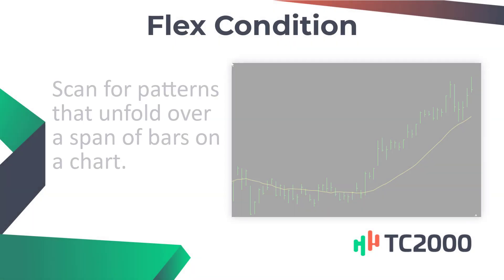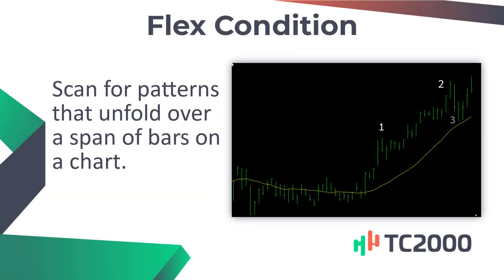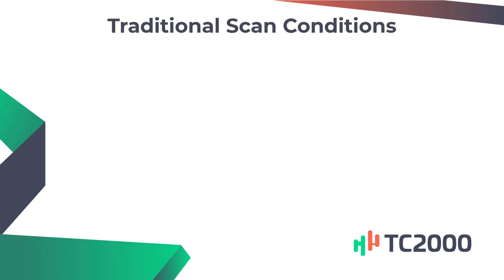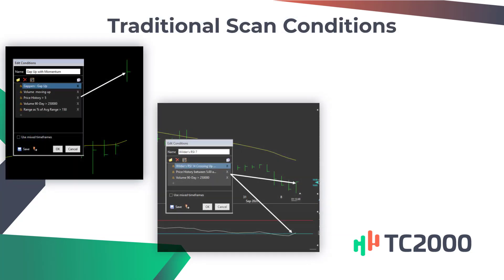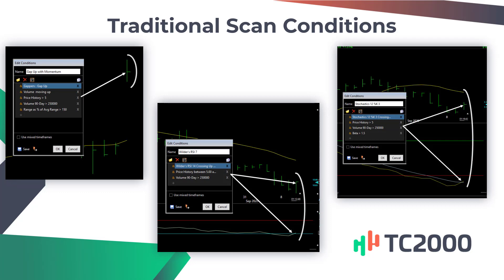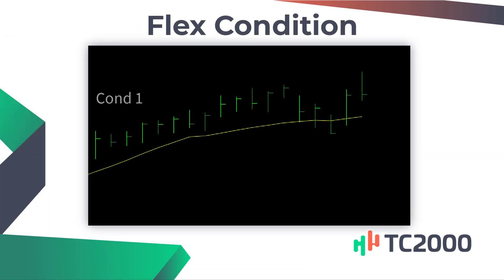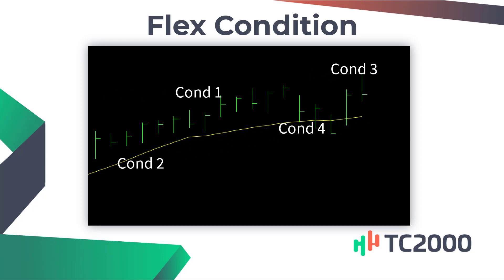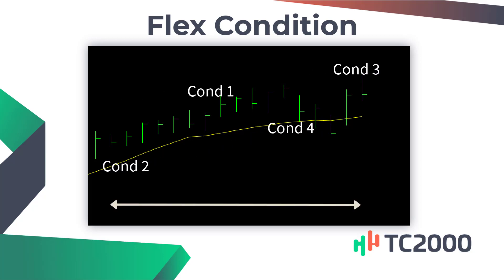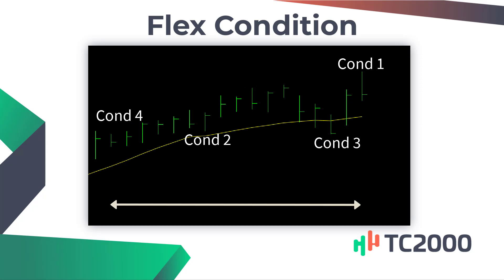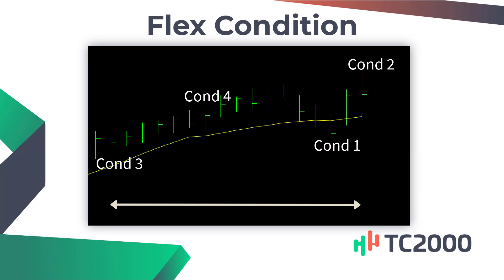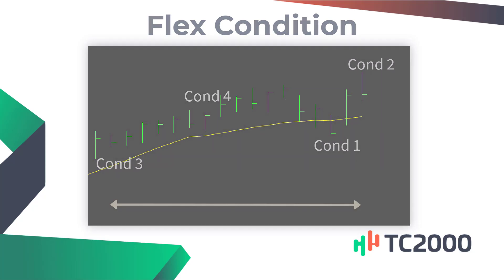Flex conditions make it easy to scan for patterns that unfold over a span of bars on a chart. When scanning, you typically think of conditions having to be true on specific bars. With flex conditions, you can have multiple conditions that do not have to be true on specific bars — instead, they can pass on any bars within a window of time. This makes it easy to conceptualize your own patterns and then scan for them. I'll show you how to do it.